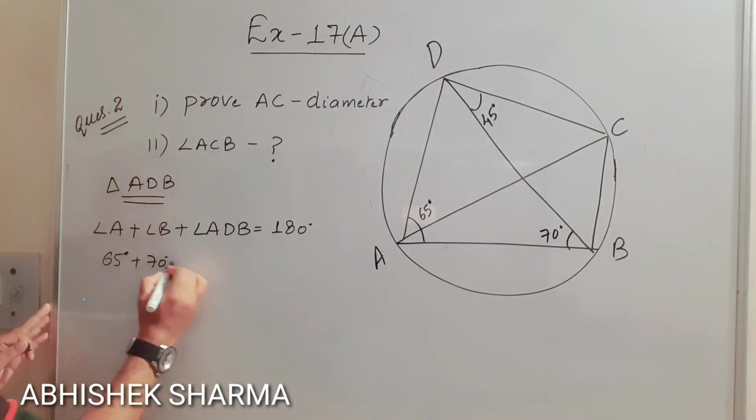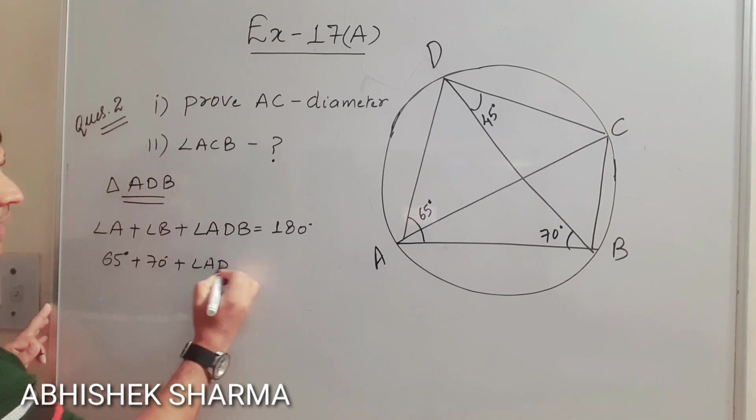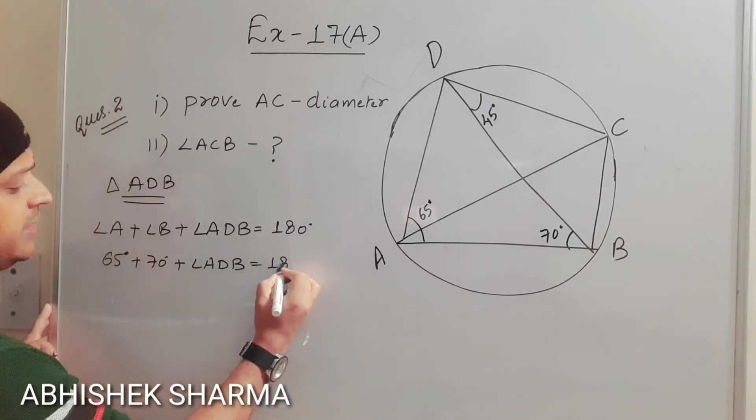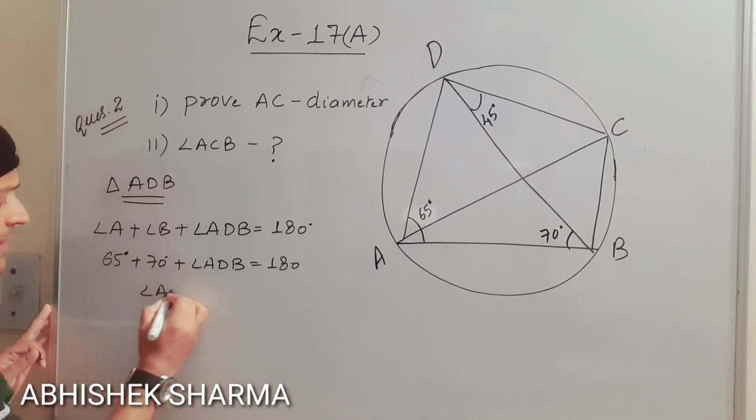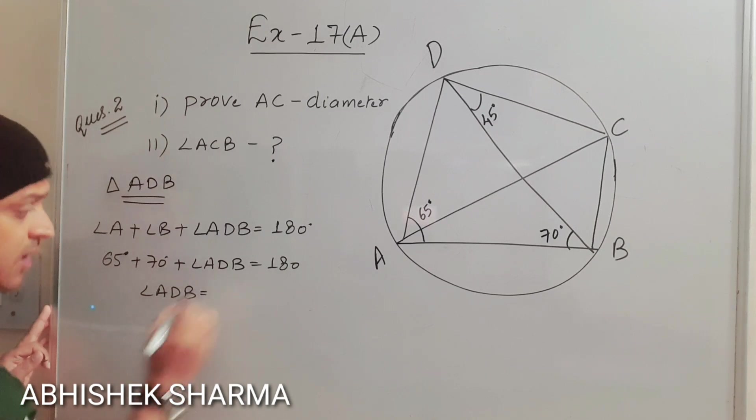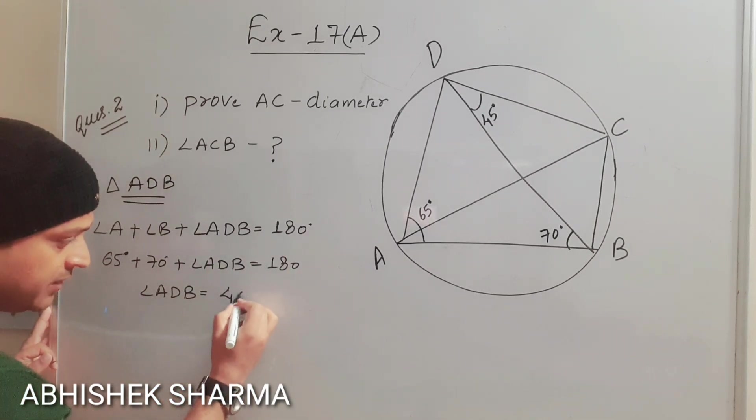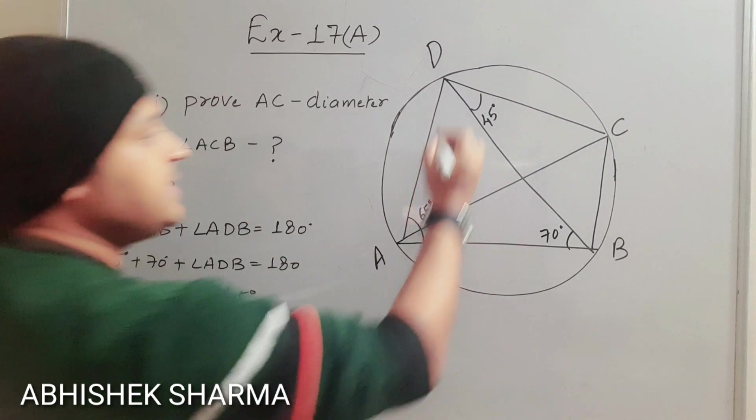What is angle ADB? That we have to calculate. ADB equals 180. So we can say ADB equals, after subtracting it will get 45 degrees. So what is angle ADB? 45 degrees.